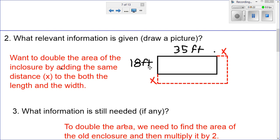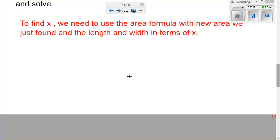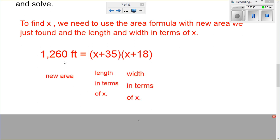Same thing with the width. The width, 18, the old width, plus x. 18 plus x. Okay, that will give us an equation of 1,260 feet, which is, there it is, which is our new area, and our length times width in terms of x.